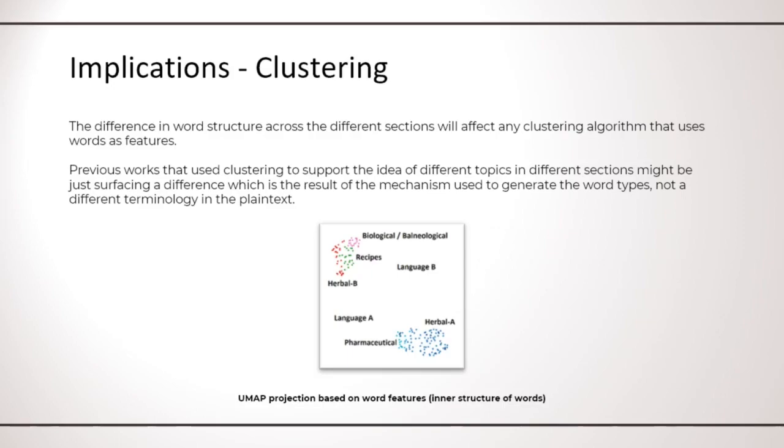This slide shows other implications specific to clustering. The difference in word structure across the different sections of the text will clearly affect the list of words appearing in each section, and in turn this will affect any clustering algorithm that uses words as features. This means previous analyses that use clustering to support the idea of different topics in the text might be just surfacing differences in the process used to generate words, not a different set of terms in the plain text.